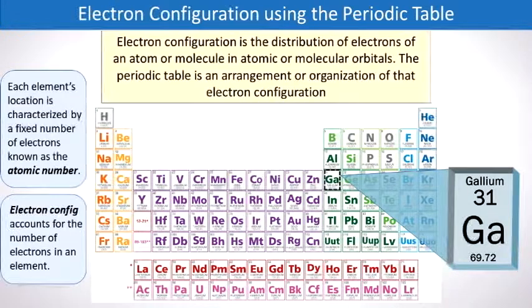Let's try another example. Let's use gallium. Again, notice that the atomic number also corresponds to the number of electrons. In the case of gallium, this is 31 electrons.